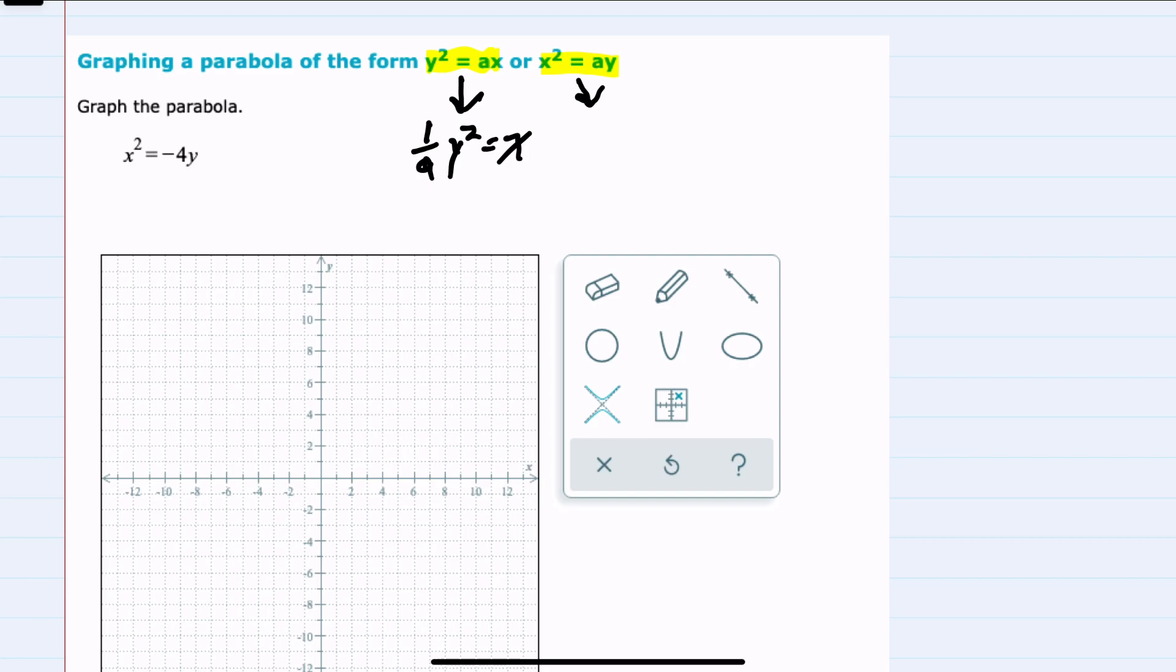Similarly, for the second form, if we solve for y, again dividing both sides by a, 1 over a x squared equals y.